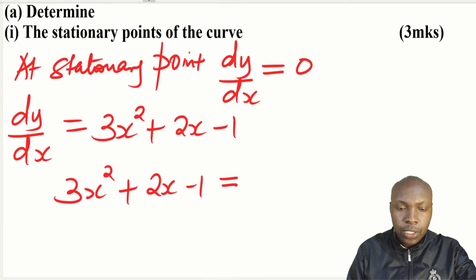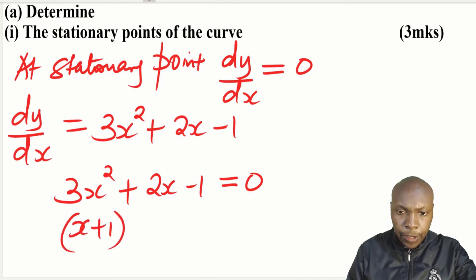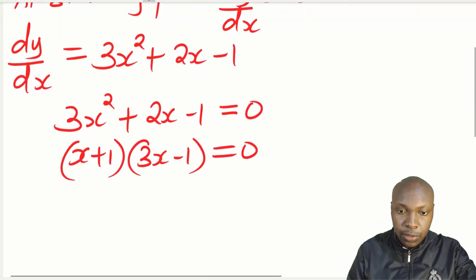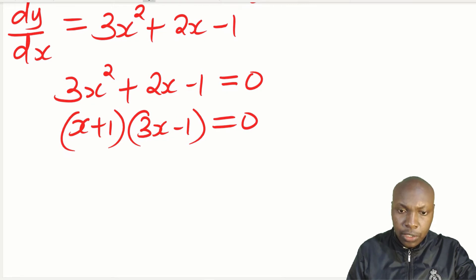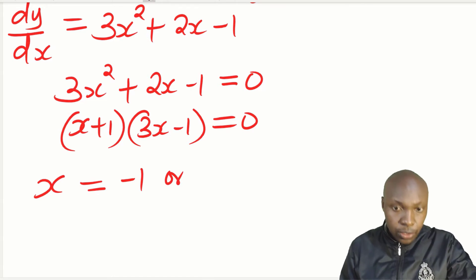This forms a quadratic equation. You can use any suitable method to solve it — I've used factorization. Factorizing gives (x + 1)(3x - 1) = 0, and solving these we get x = -1 or x = 1/3.